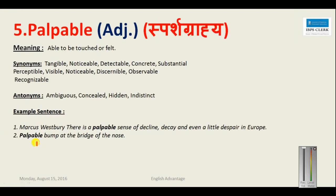The next word is 'palpable'. Palpable is used for something tangible, detectable, concrete — something you can see and touch. Substantial means the major or main part of something. Synonyms: perceptible, visible, noticeable, discernible, observable and recognizable. Antonyms: ambiguous, concealed, hidden, indistinct. Example: 'There is a palpable sense of decline, decay and even a little despair in Europe.' 'Palpable bump at the bridge of the nose' — a medically related usage.